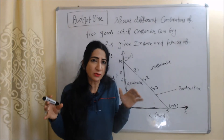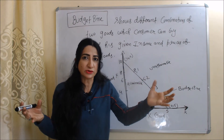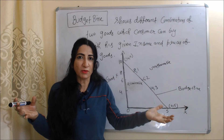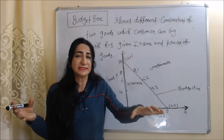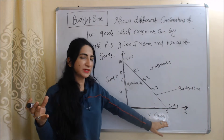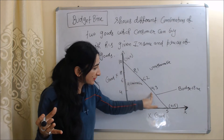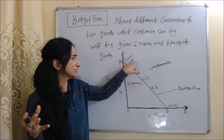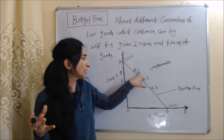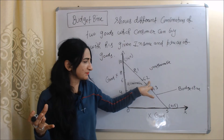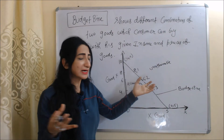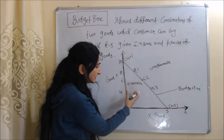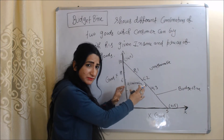A budget line shows the different combinations of two goods which a consumer can buy with their given income and the prices of goods. In this diagram, on the X-axis we have good X and on the Y-axis we have good Y. The line represents our budget line. The consumer can buy 10 units of Y and 0 units of X, or 8 units of Y and 1 unit of X, or 6 units of Y and 2 units of X, and so on. All combinations inside the budget line are attainable, and any combination outside it is unattainable.